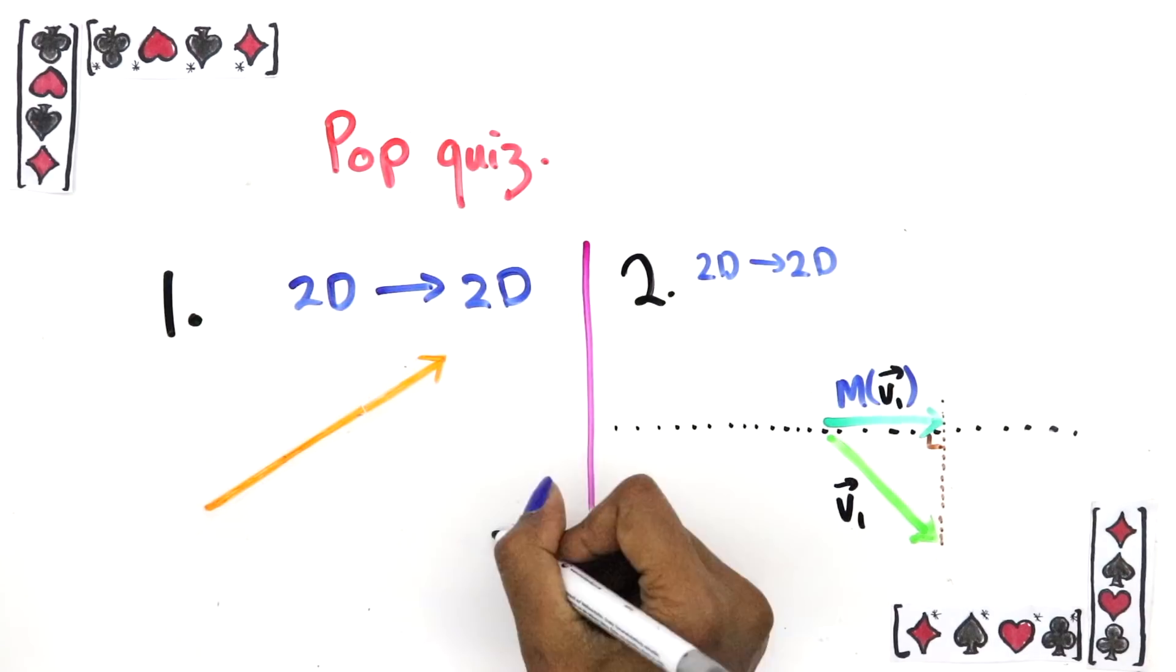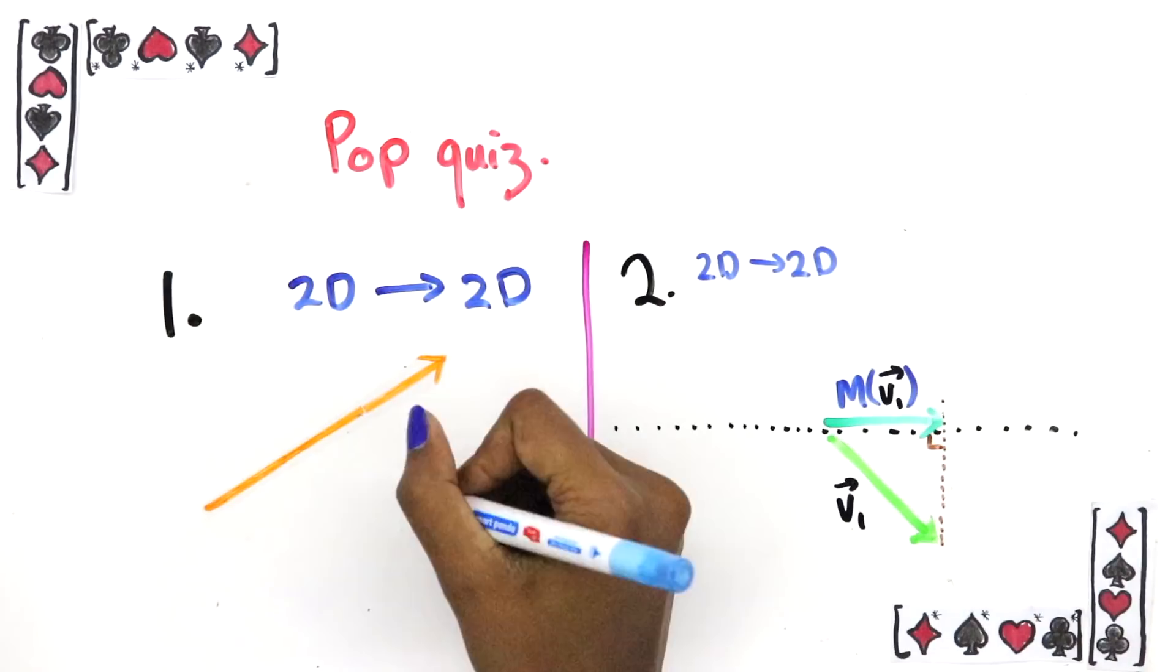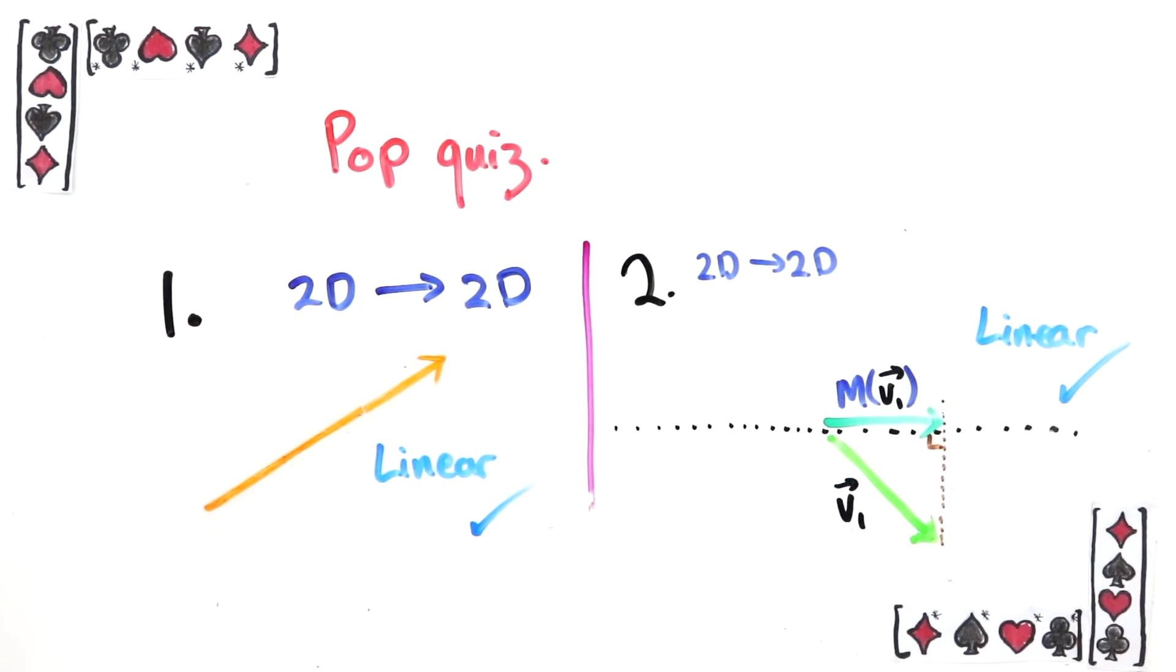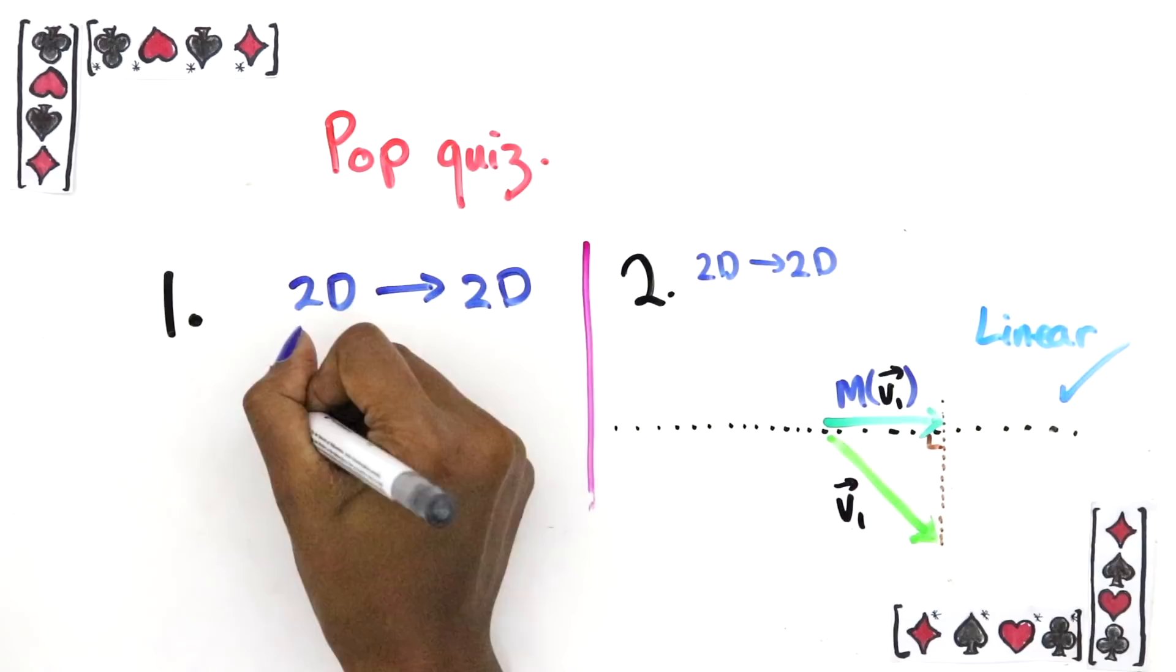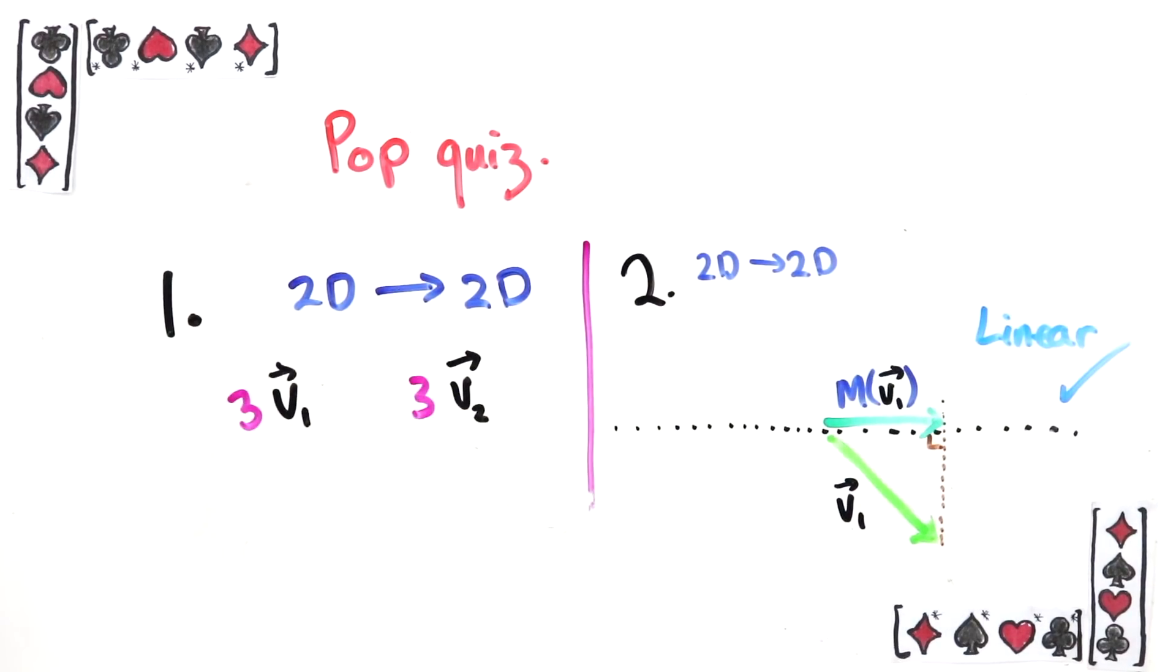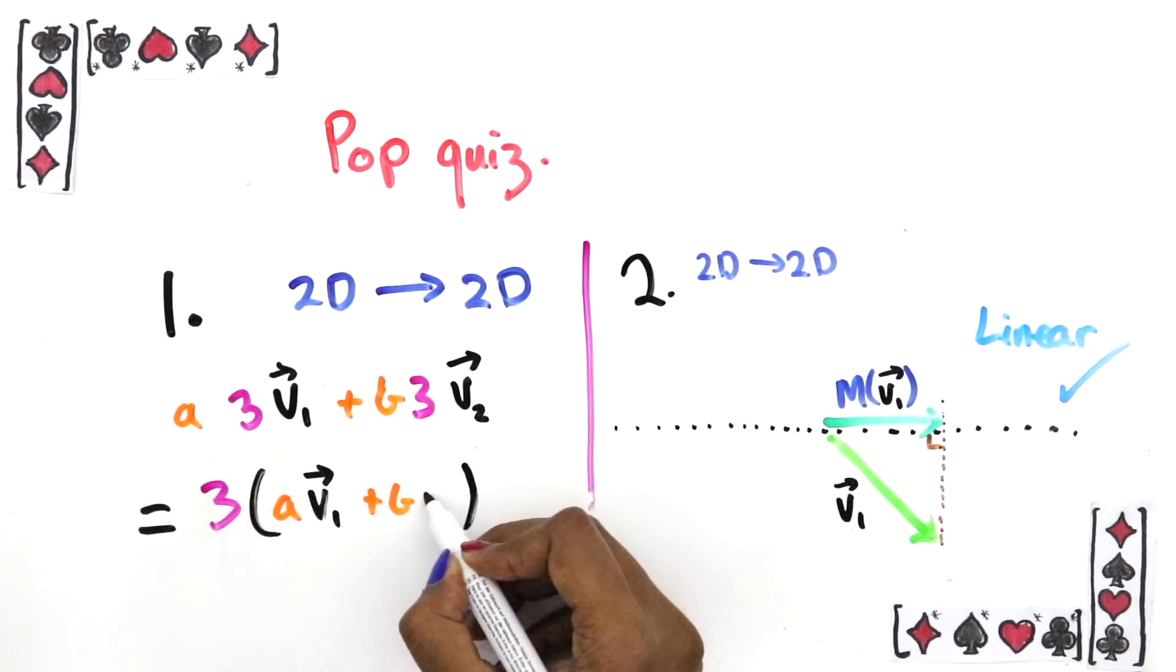Okay, so the answer might surprise you but they're both linear. To see this, take the first one, take any two vectors and apply the transformation to them and then make a linear combination of them. This is clearly the same as if you make the linear combination of them and then multiply the result by 3.